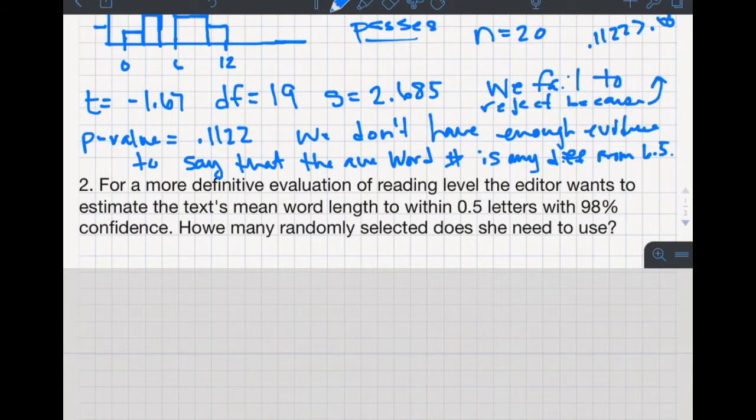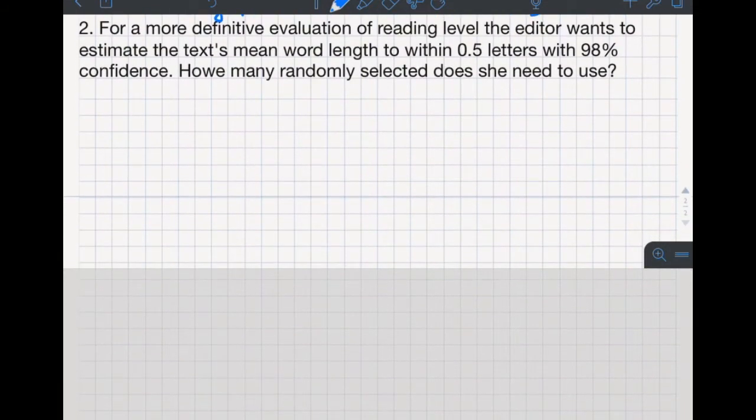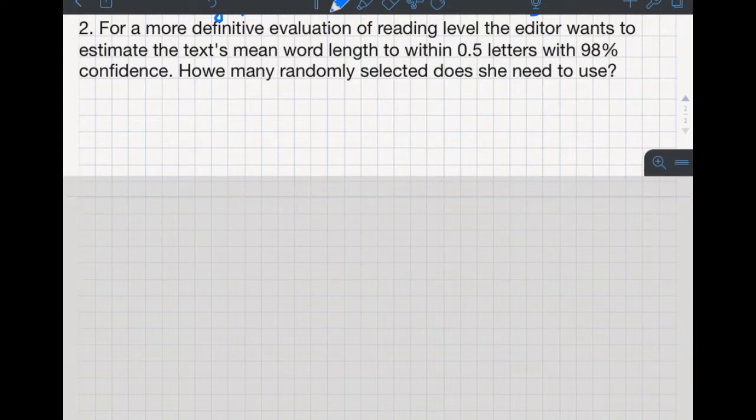The next part talks about getting a little bit more accuracy. They want to talk about if I wanted to get within half a letter of the correct mean when creating a confidence interval. How big of a sample size do I need to get that result with 98% confidence? Something to note is that when you're doing this in a t-score setting, we don't know the sample size, therefore we can't get the degree of freedom, so we have to assume. To start with, we're going to use z-star to estimate.